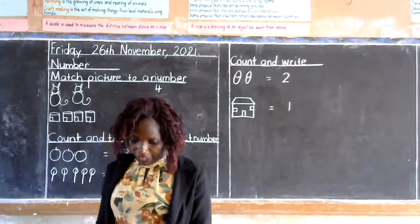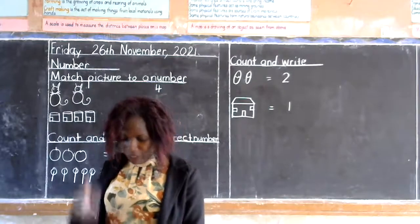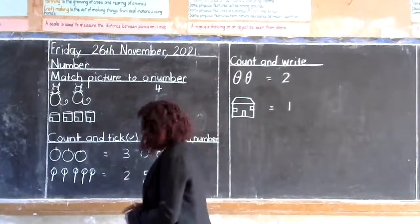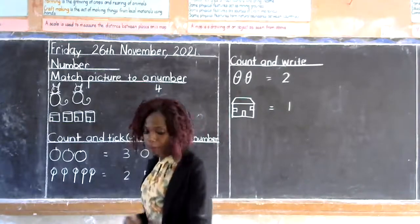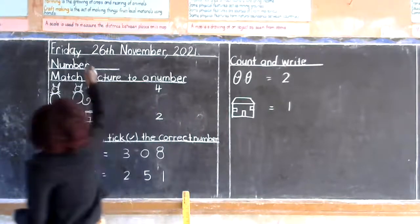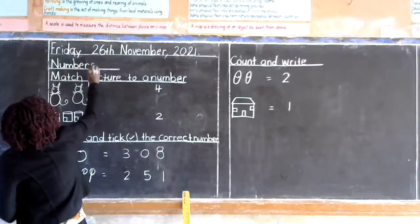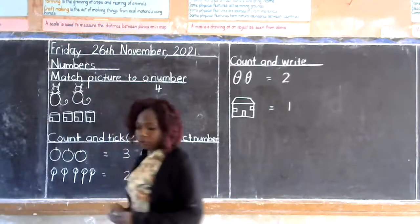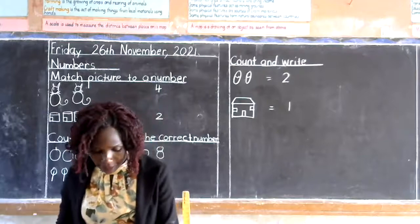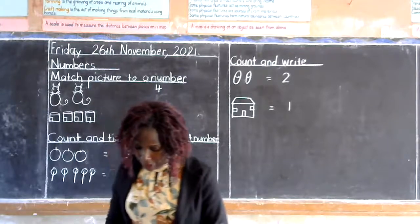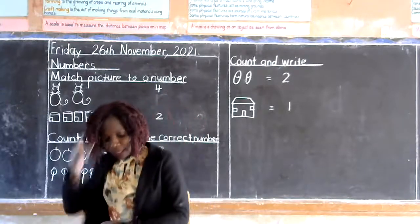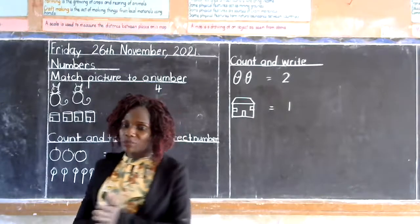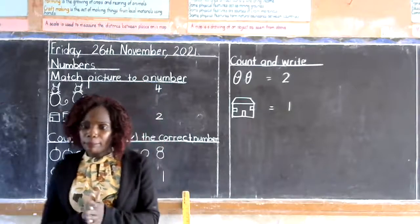Okay friends? We are still on the topic of numbers. Before we continue with our topic, let us recite this rhyme. I want you to recite this rhyme with me and I want you to participate with me. Okay?